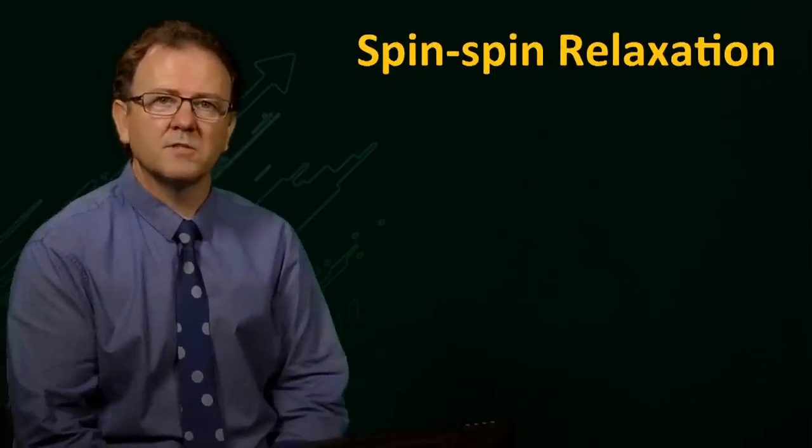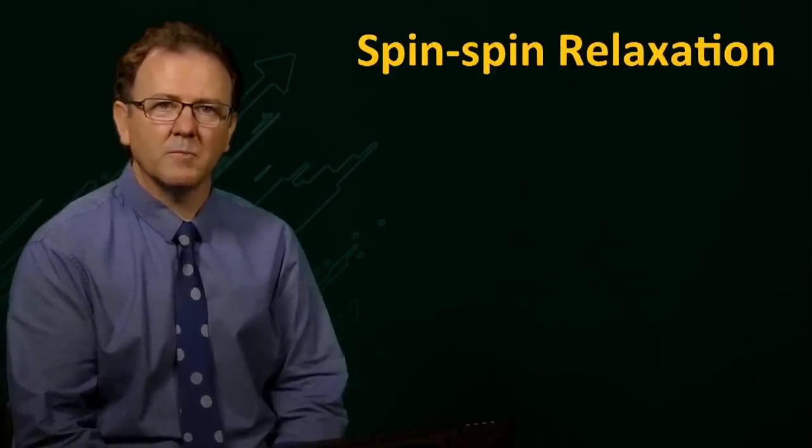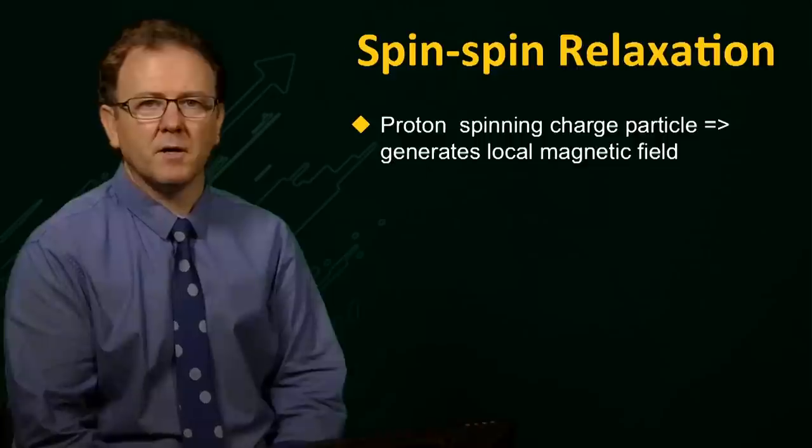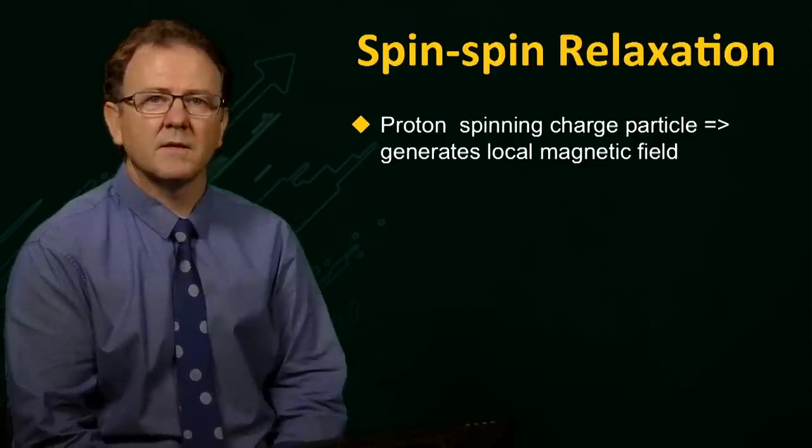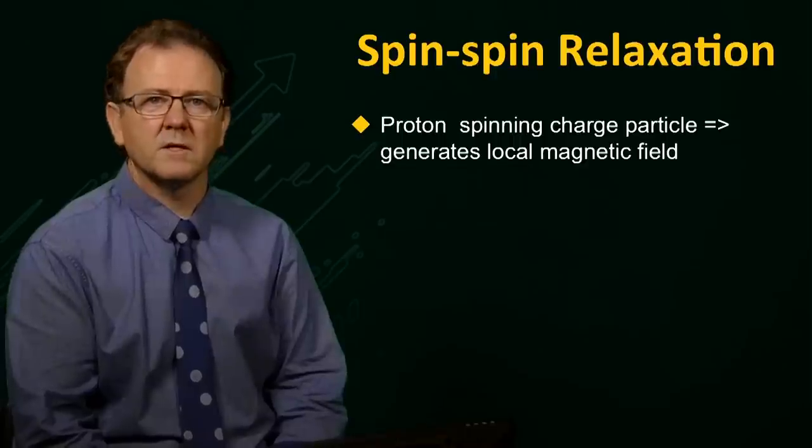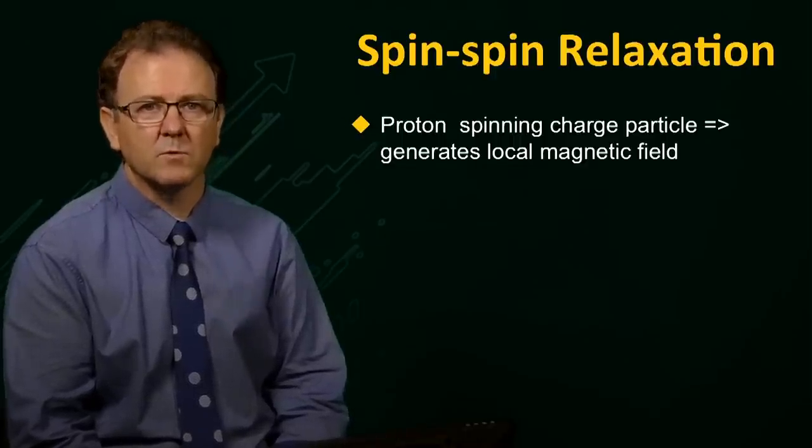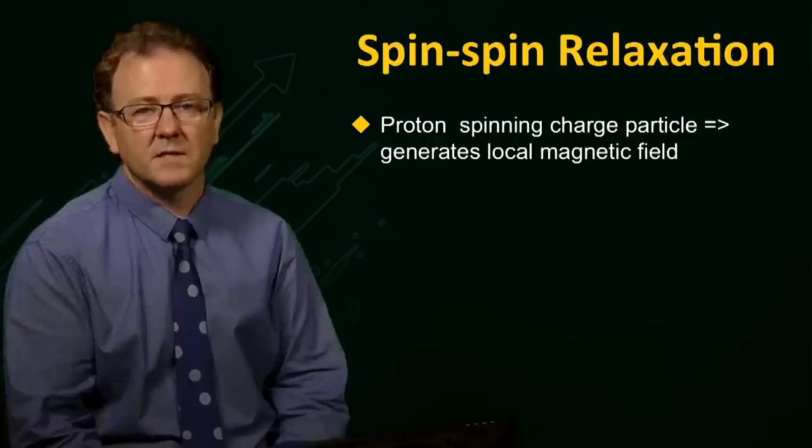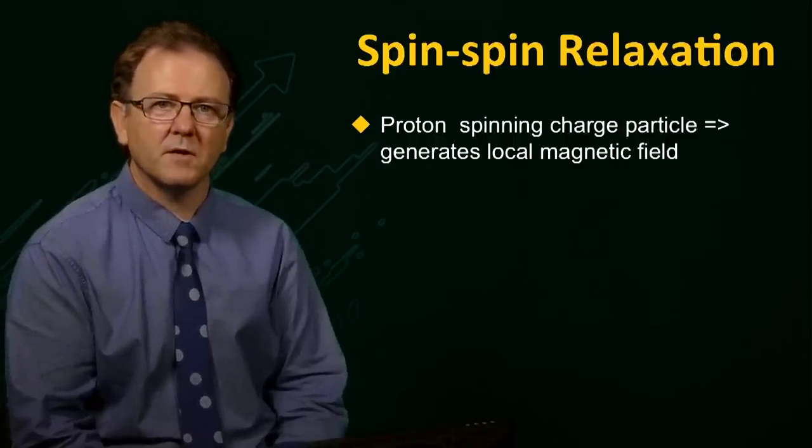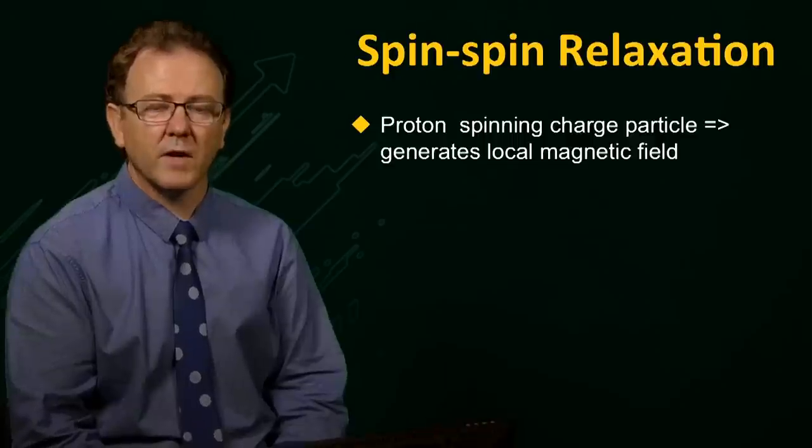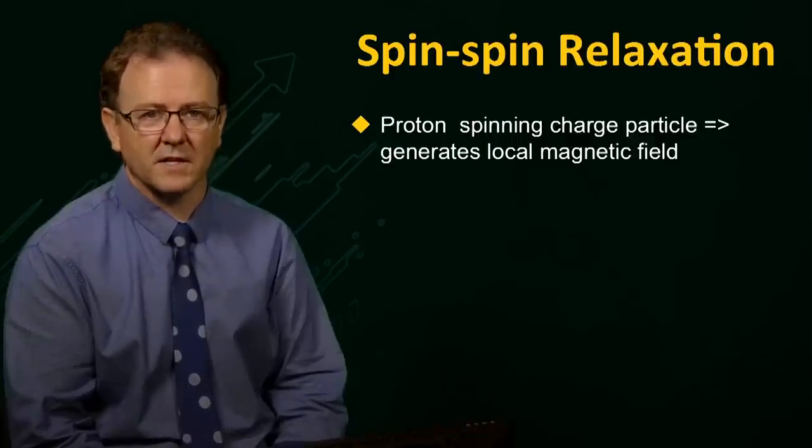As we know, the proton is a spinning charged particle, and as such, will generate a local magnetic field of its own. Another proton nearby may be affected by the local field of the first. The effective field at the second proton could be altered by that of the first proton, and so its Larmor frequency will change. The extent of this shift in frequency will depend on the proximity of the first proton, and the direction of its local field at the second nucleus.